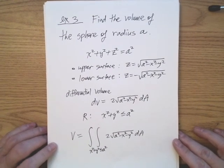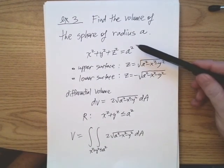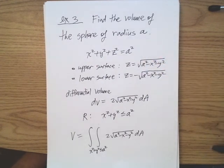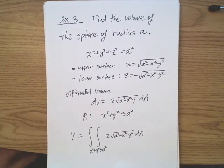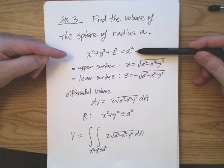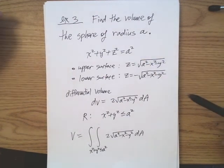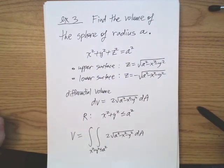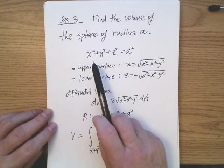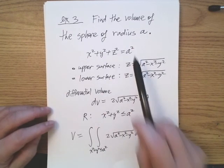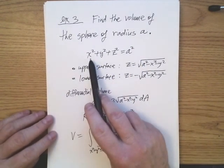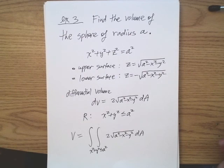Let's do one last example: find the volume of a sphere of radius A. Center the sphere at the origin. The surface satisfies x squared plus y squared plus z squared equals A squared. Solving for z gives an upper surface z equals the positive square root of A squared minus x squared minus y squared, and a lower surface z equals the negative square root.